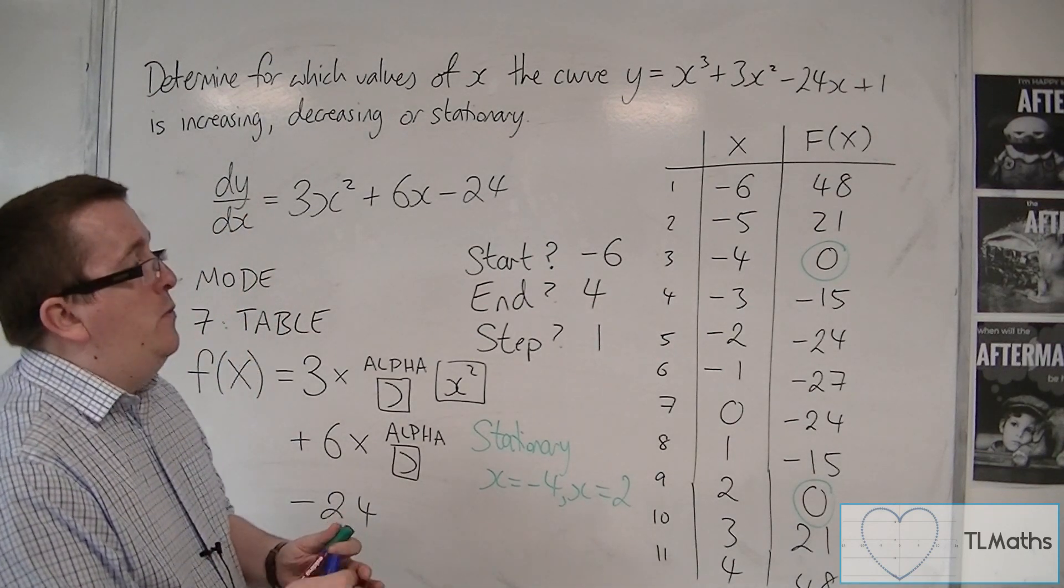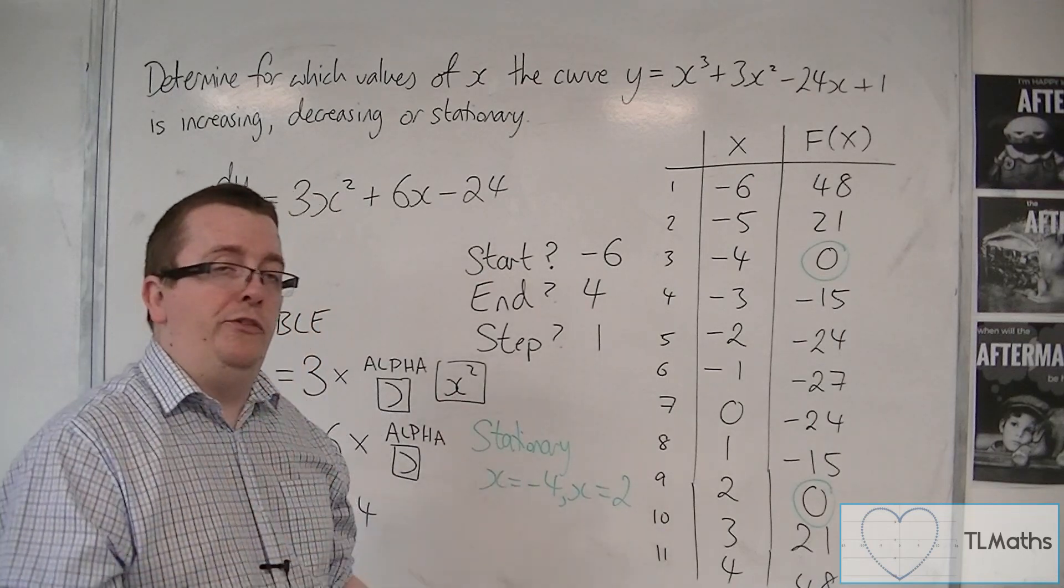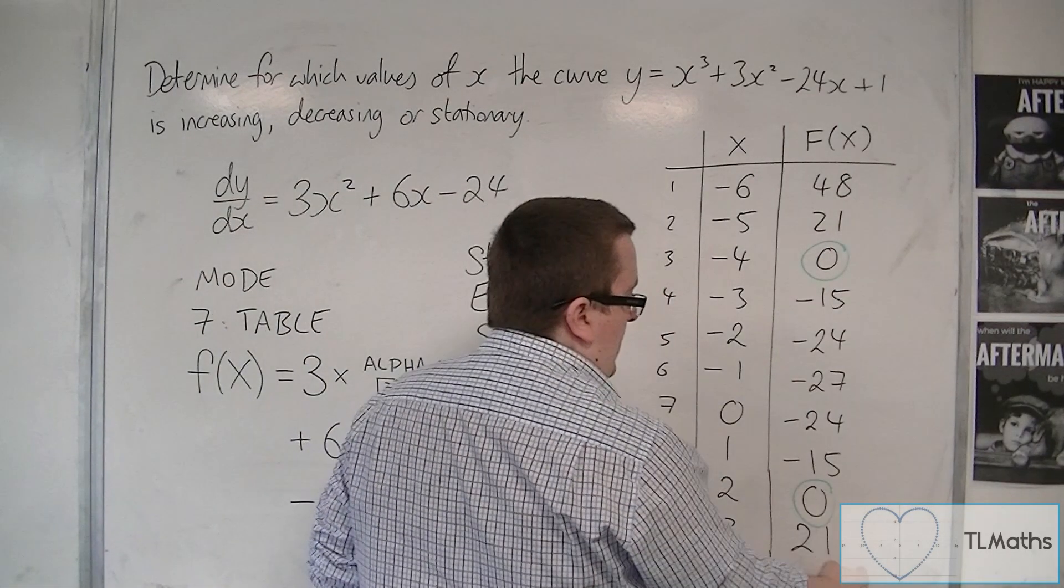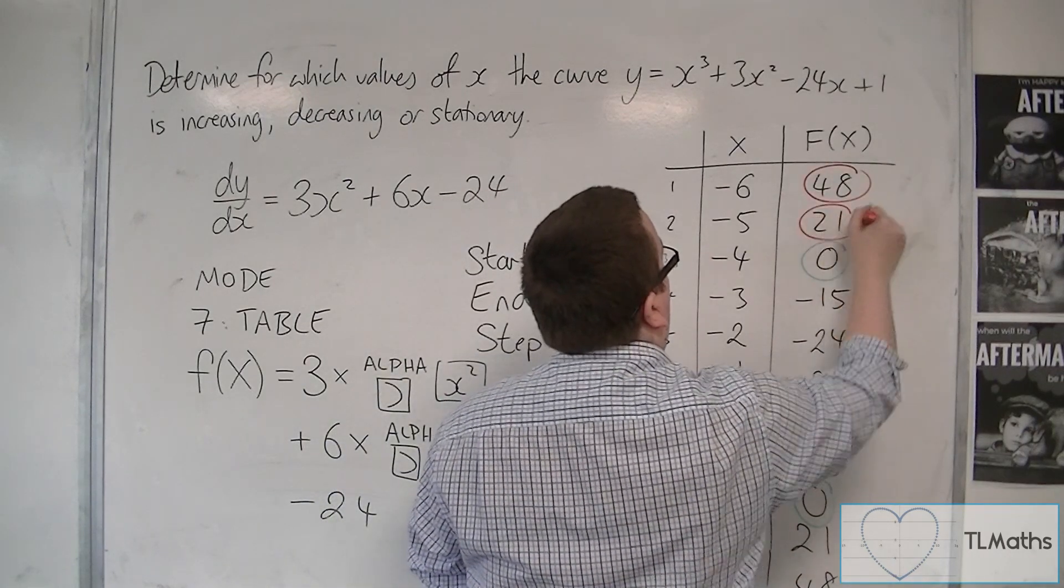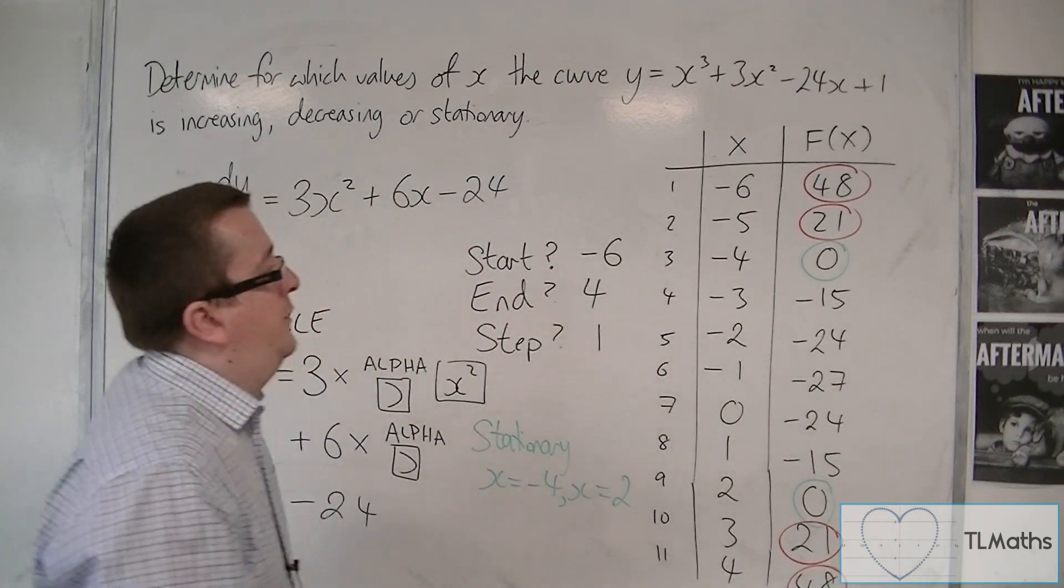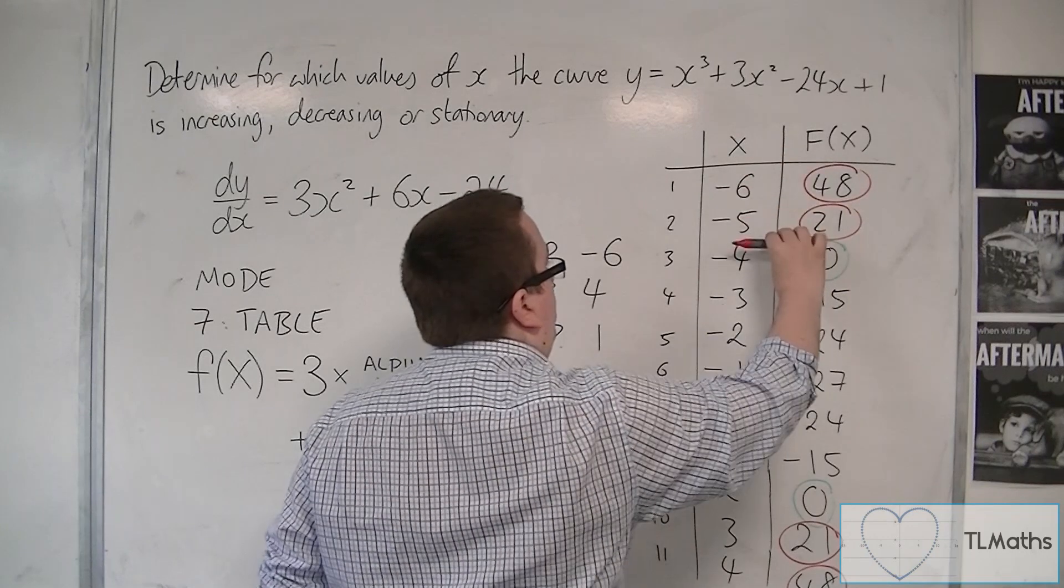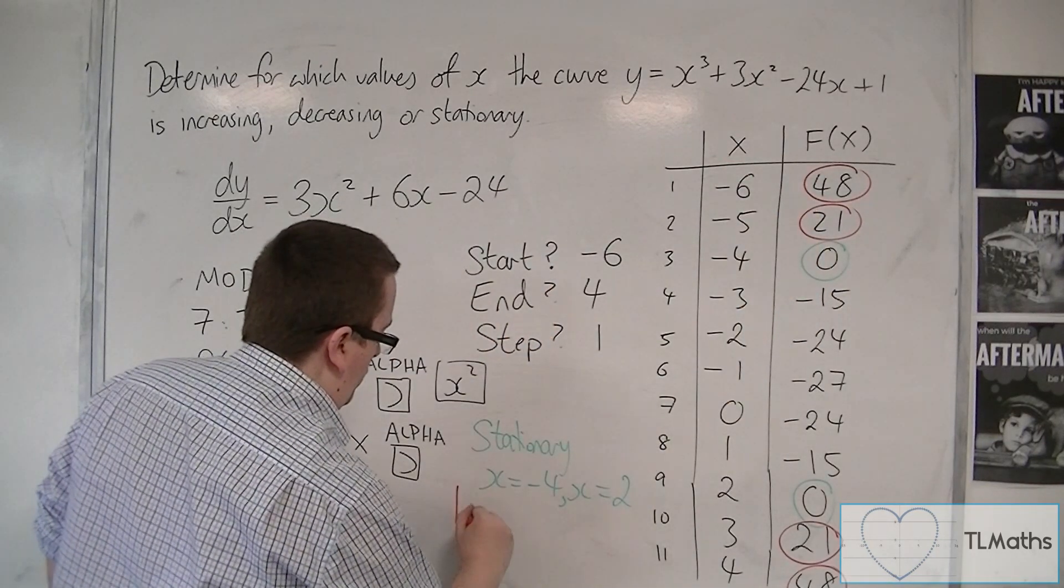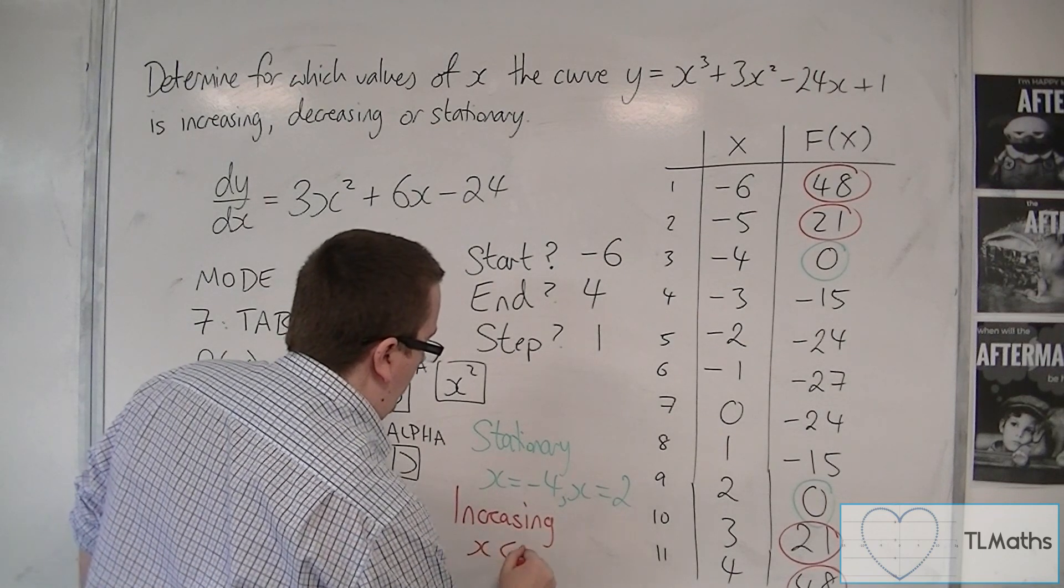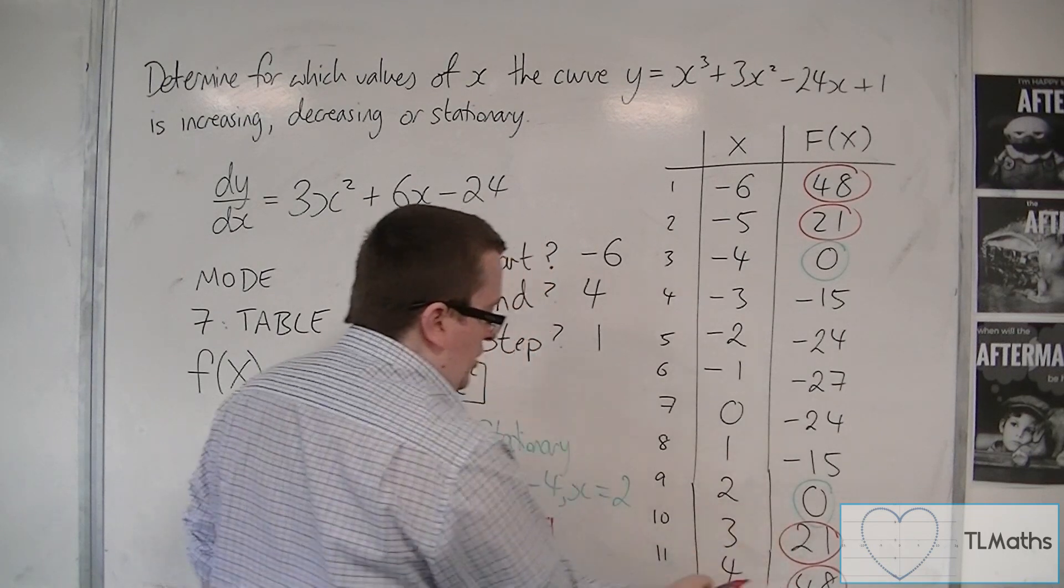I could also see where it's increasing, because that's where the gradient is positive. If you have positive numbers, so there and there, there and there, that means that the curve is increasing at these points. And so it is increasing when x is less than minus 4, and increasing when x is greater than 2.